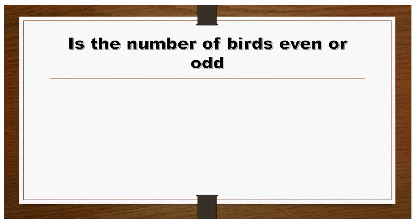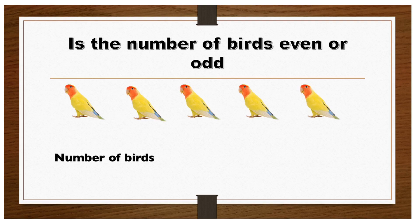Let's look at this example. Is the number of birds even or odd? Let's count the birds. 1, 2, 3, 4, 5. Number of birds equals odd. This is because they are not divisible by 2.